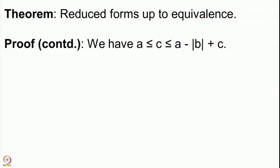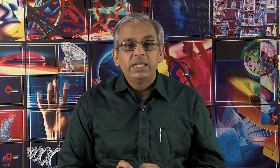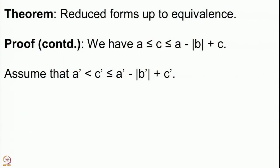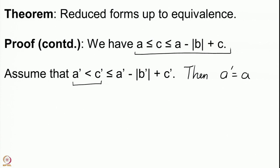Since our form f is reduced, we have a ≤ c ≤ a - |b| + c. Similarly for f prime, we have a prime ≤ c prime ≤ a prime - |b prime| + c prime. We begin by assuming the first inequality for f prime is strict: a prime < c prime. Among the three smallest values taken by f prime, a prime is the smallest, and therefore a prime must equal a, since the sets of integers properly represented by f and f prime are the same.